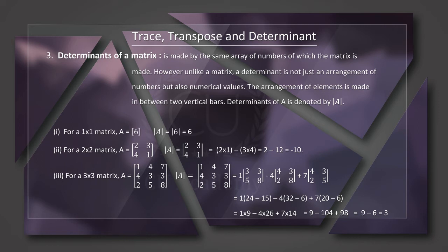Now we will discuss determinants. We have an arrangement of numbers in the determinant. We will arrange the elements in the determinant. However, unlike a matrix, a determinant is not just an arrangement of numbers but also has a numerical value. It is also a unique number.